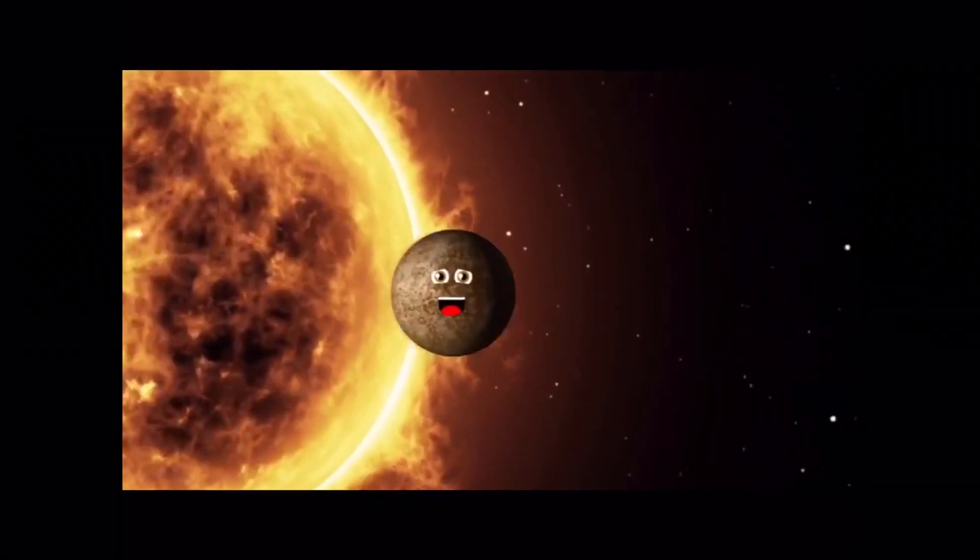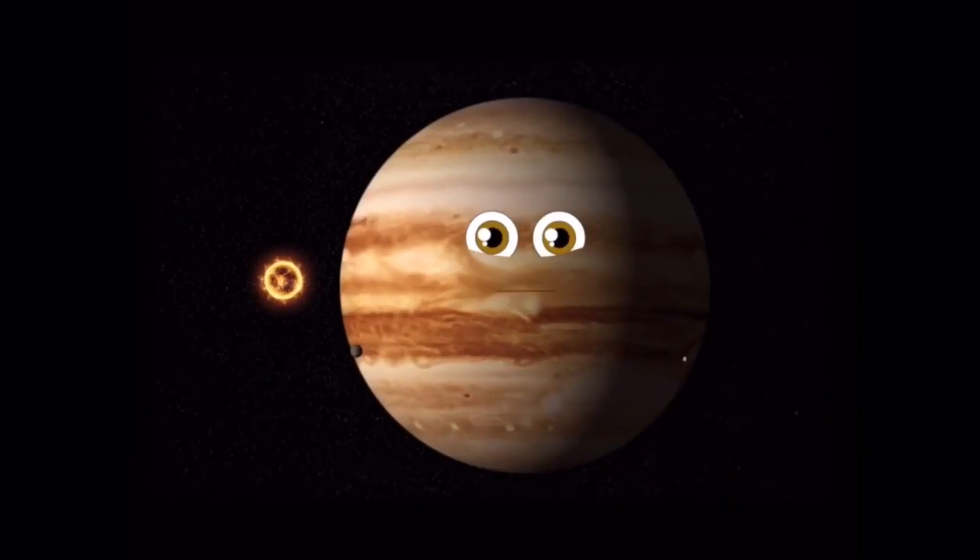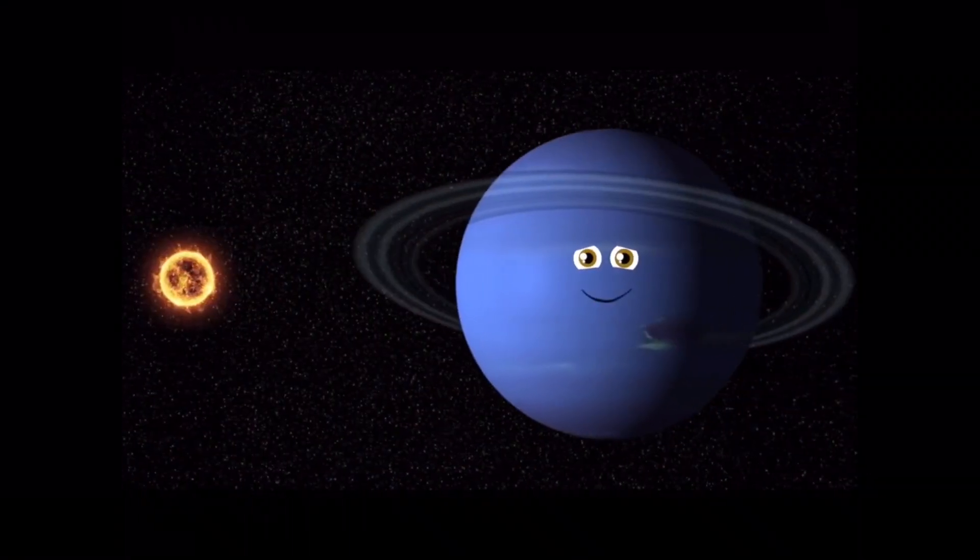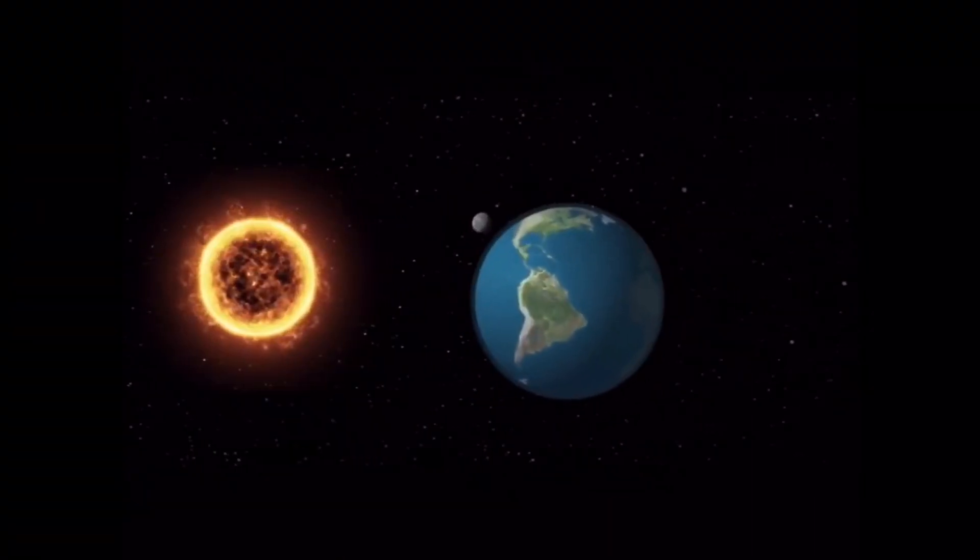Well there is Mercury, Venus, Earth and Mars, Jupiter and Saturn, those are the big ones, Uranus and Neptune, but not Pluto. Those are the planets.